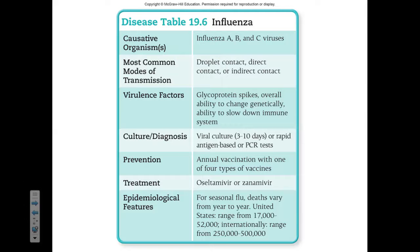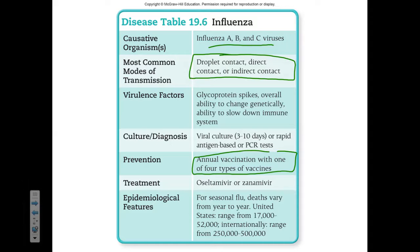To summarize: with influenza there are three main kinds of the virus. We can get that virus by breathing it in, touching it, or ingesting it. The best way to combat it is the vaccine. In acute cases of the viral infection, we can administer drugs. And every year in the United States, tens of thousands of people die from influenza.